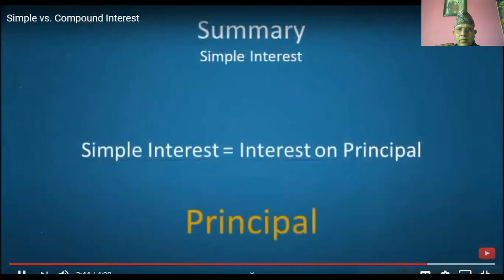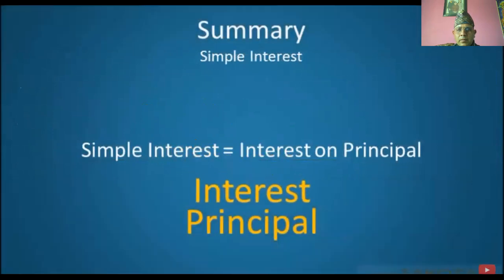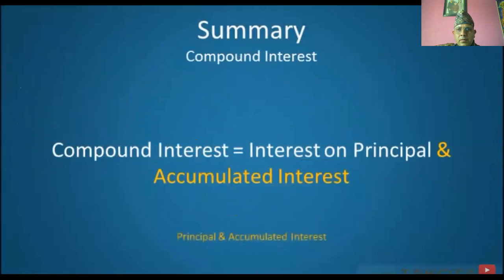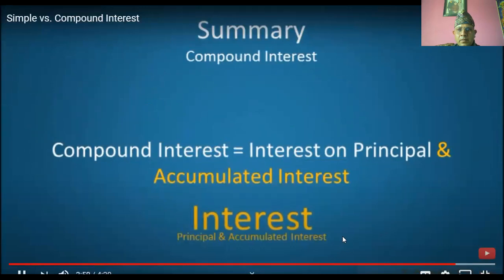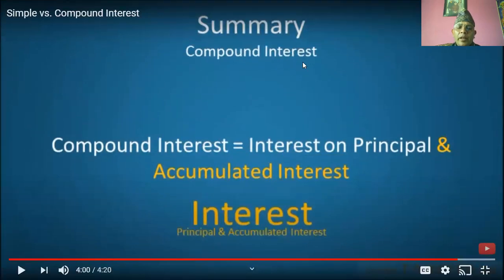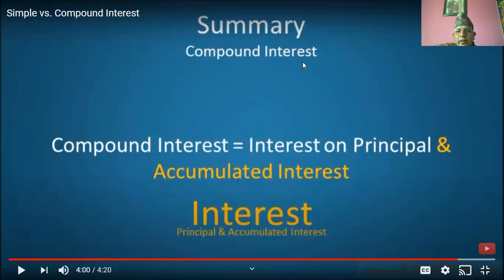In summary, simple interest is interest that is paid only on the initial principal of a loan or deposit. On the other hand, compound interest is interest that is paid on both the principal of a loan or deposit, as well as on the interest that is accumulated. From this video, you can conclude that compound interest is interest on principal and accumulated interest. These are the differences between simple interest and compound interest. Try to take the concept and do some questions as homework which are given in your homework section. Thank you.